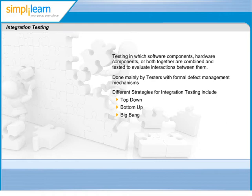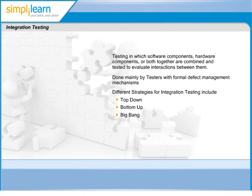Another disadvantage of top-down integration testing is its poor support for early release of limited functionality. The bottom-up approach requires the lowest-level units to be tested and integrated first. These units are frequently referred to as utility modules. By using this approach, utility modules are tested early in the development process, and the need for stubs is minimized.